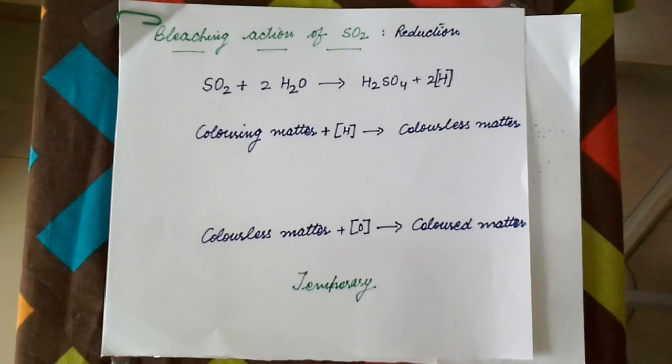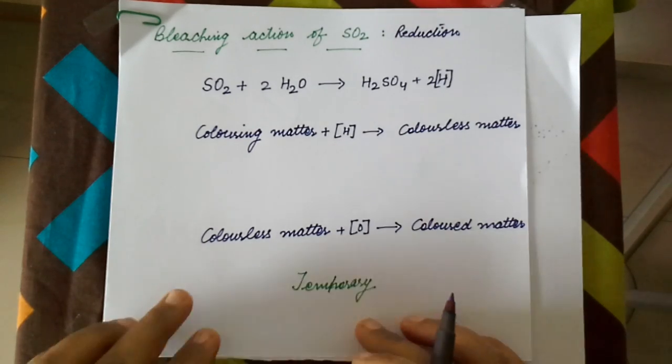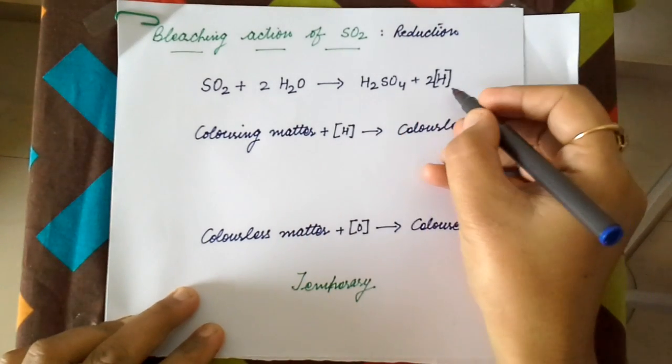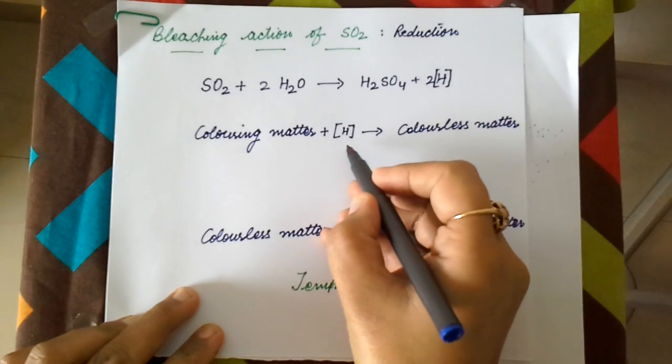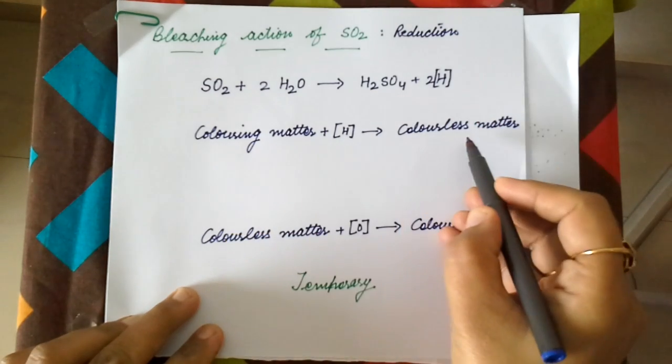The bleaching action of sulfur dioxide is due to its reducing properties. Sulfur dioxide in the presence of moisture gives out nascent hydrogen, and this nascent hydrogen reduces the coloring matter to colorless matter.